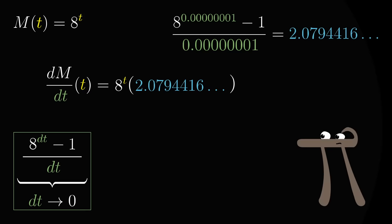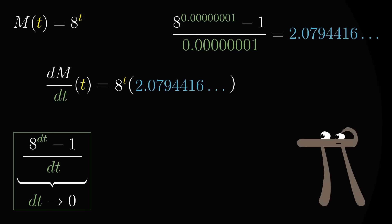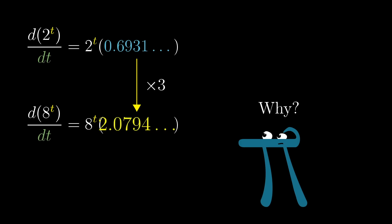And maybe, just maybe, you would notice that this number happens to be exactly 3 times the constant associated with the base for 2. So these numbers certainly aren't random, there is some kind of pattern. But what is it? What does 2 have to do with the number 0.6931, and what does 8 have to do with the number 2.079?